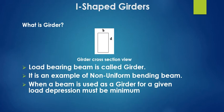Let us move to the topic, I-shaped girders. What is a girder? A load-bearing beam is called a girder. It is an example of non-uniform bending. When a beam is used as a girder for a given load, depression must be minimum.